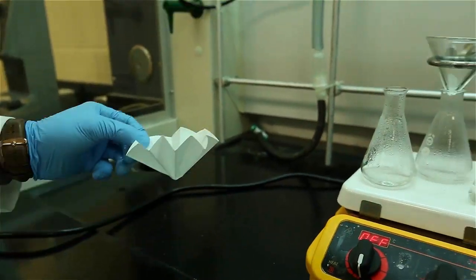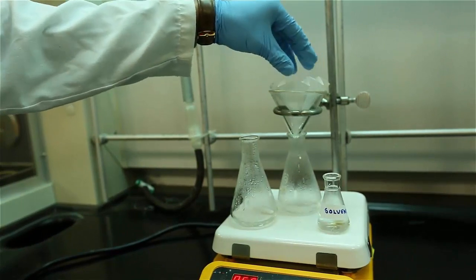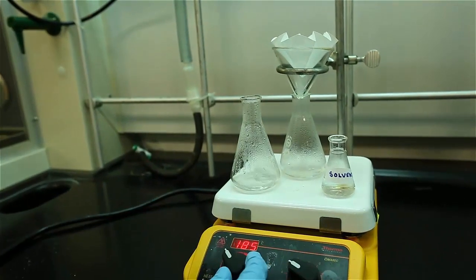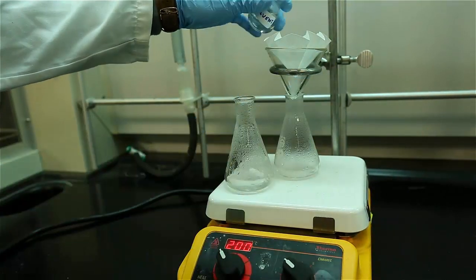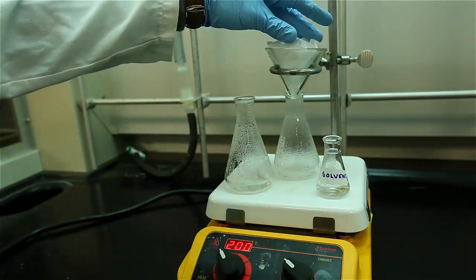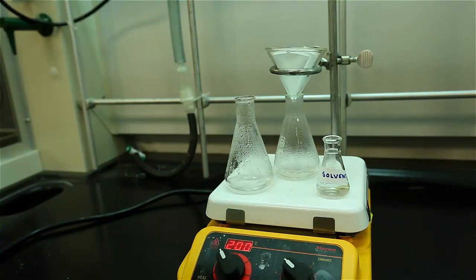Before filtering your solution, ensure that the funnel is as close to the mouth of the Erlenmeyer as possible and pour small amounts of hot solvent through the funnel and filter paper. To save time, the preparation of the gravity filtration setup can be done while the solvent is dissolving the solid.